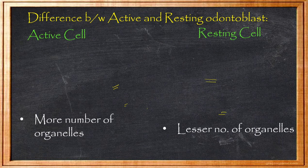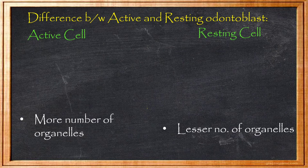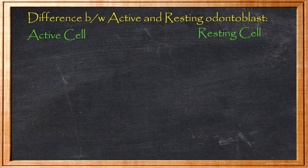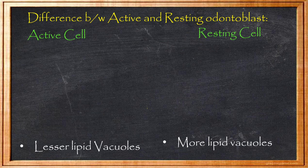To summarize active vs resting organelle differences: active cells have abundant organelles because they are actively synthesizing dentine. In resting cells, the lipid vacuoles are increased, whereas in active cells, lipid vacuoles are reduced.